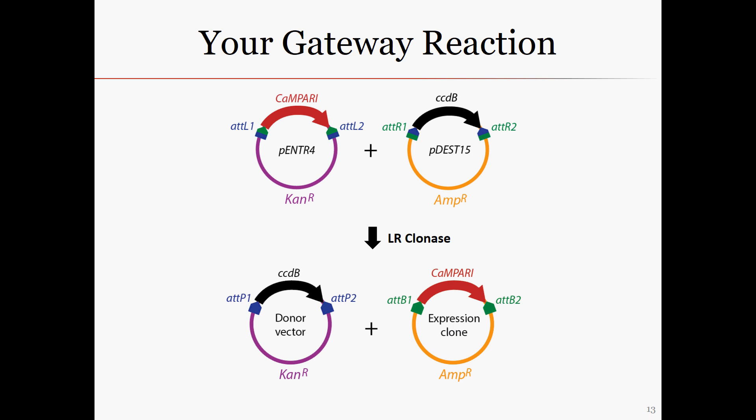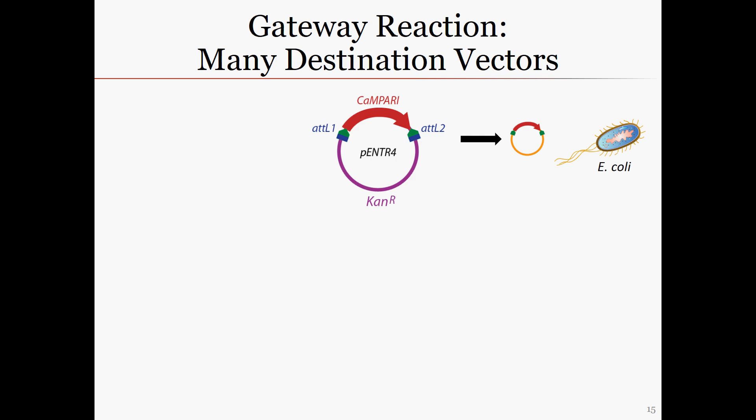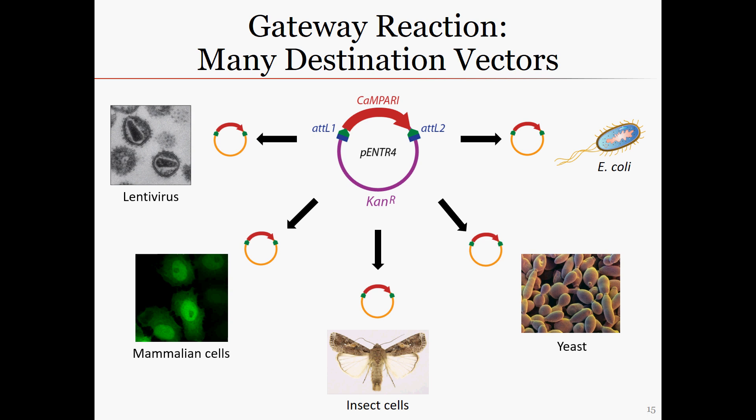In our system, we are using PDEST15 as our destination vector so that we can express our protein in E. coli. However, the advantage of the gateway system is that the same entry vector could be used to put our gene into a variety of other expression systems, without the need to design a new cloning strategy. There are also destination vectors for specific assays such as RNAi, 2-hybrid, or antibody production.